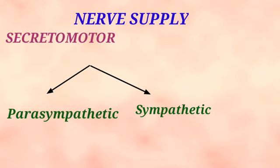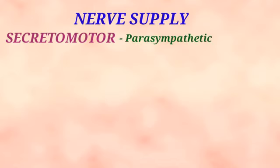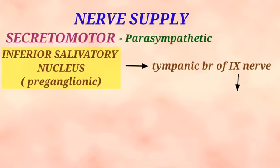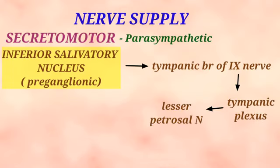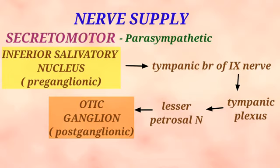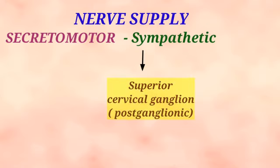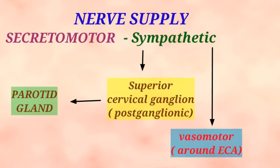The secretomotor supply of the parotid gland is derived from both parasympathetic and sympathetic nerves. The parasympathetic innervation starts from the inferior salivatory nucleus in the medulla as preganglionic parasympathetic fibers, which pass successively through the tympanic branch of the glossopharyngeal nerve, the tympanic plexus, and the lesser petrosal nerve, which relays in the peripheral parasympathetic ganglion called the otic ganglion. The postganglionic fibers from this ganglion pass through the auriculotemporal nerve and finally reach the gland to enhance its secretion. The sympathetic fibers arise from the superior cervical ganglion and reach the gland to provide secretomotor and vasomotor supply by winding around the external carotid artery.